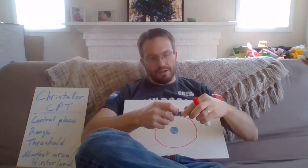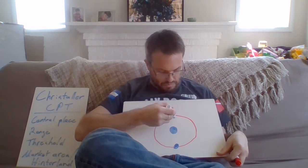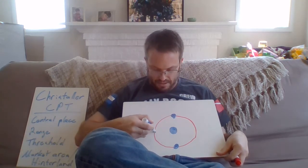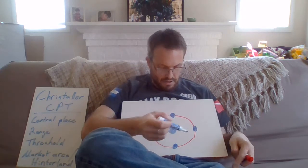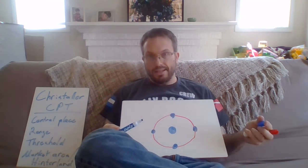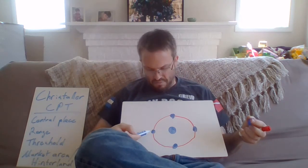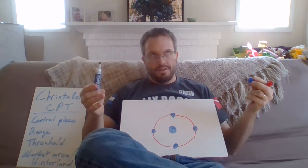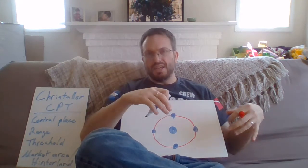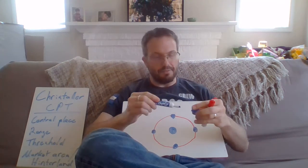Central place theory also functions around the idea that arranged around these market areas are smaller central places. For us again in the Seattle area, we'd say this is Seattle, this is Tacoma. You might say this is Bremerton, although it doesn't really line up with it. City, smaller city, town, hamlet — that kind of thing. Let's just say this is Bremerton.